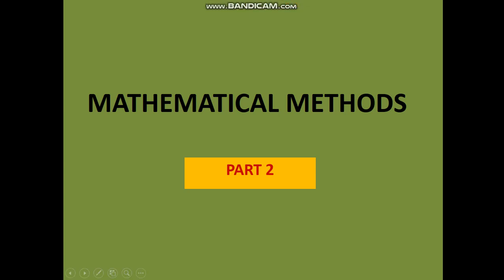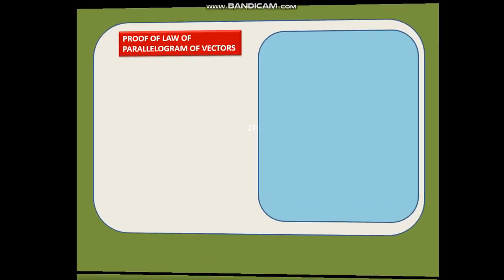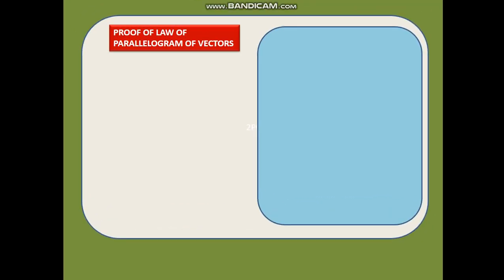In Part 1, we talked about the triangle law of vector addition, the polygon law of vector addition, and the parallelogram law of vector addition. Now we are going to prove the parallelogram law of vectors and find the magnitude and the direction.